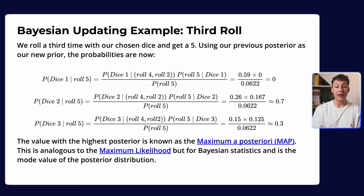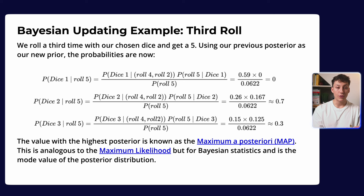Dice two is the most likely outcome — this is known as maximum a posteriori, or MAP. It's very analogous to maximum likelihood, but for Bayesian stats. Maximum likelihood asks what is the most likely outcome given data; MAP asks what is the most likely hypothesis given we've had this data. Make sure you go through this slowly in your own time, as grasping Bayesian updating is the fundamental building block behind Bayesian inference.